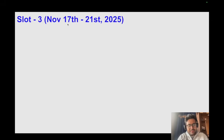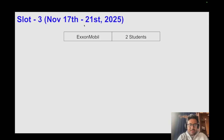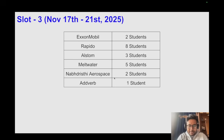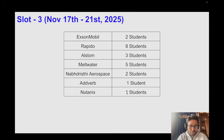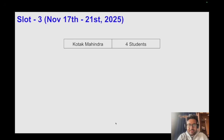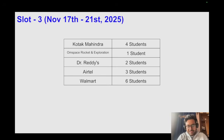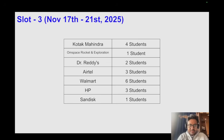Slot 3 ran from November 17th to November 21st. Companies and students placed: Exxon Mobil 2, Rapido 8, Alstom 3, Meltwater 5, Novordrishti Aerospace 2, Advov 1, Neutronix 1, Britannica Education 1, Kantar 1, Astrome Technologies 3, Kotak Mahindra 4, OHM Space Rocket and Exploration 1, Dr. Reddy's 2, Airtel 3, Walmart 6, HP 3, and Sandisk 1.